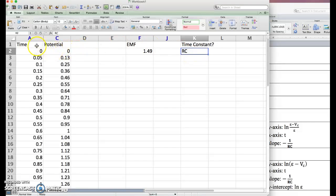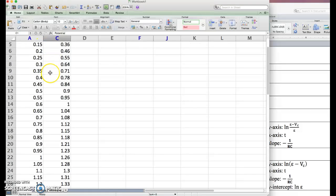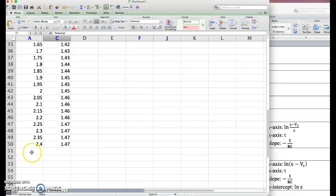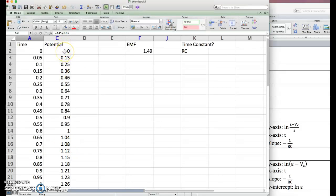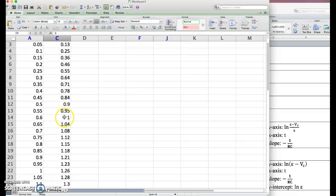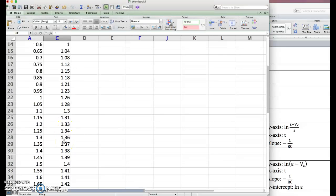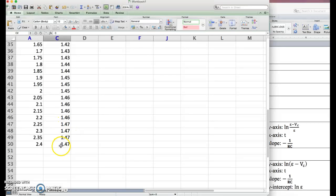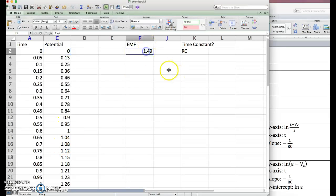The data you're going to gather is going to involve time and potential. You'll start your recording, close the switch, and then gather some data. This is charging data: potential starts at zero, climbs pretty rapidly, but that rate of increase starts to taper off until eventually it's more or less a constant value. In this case, the value of the battery is probably going to be 1.5 volts-ish, but make sure you carefully measure that because you need to know the actual EMF of your battery.